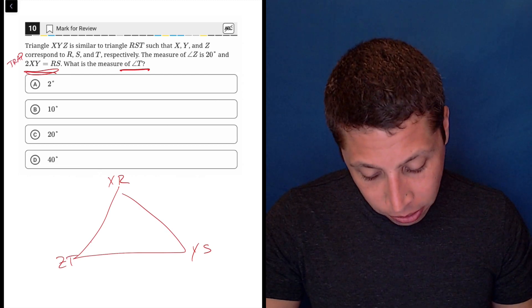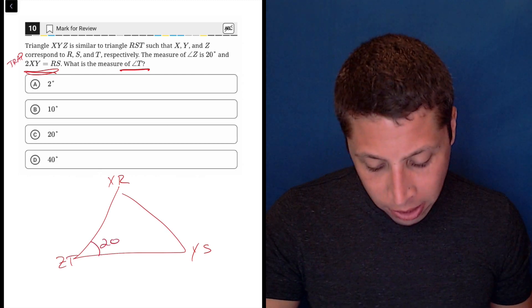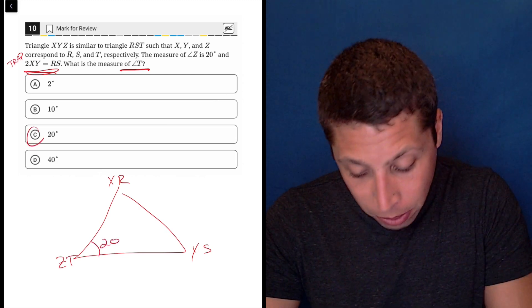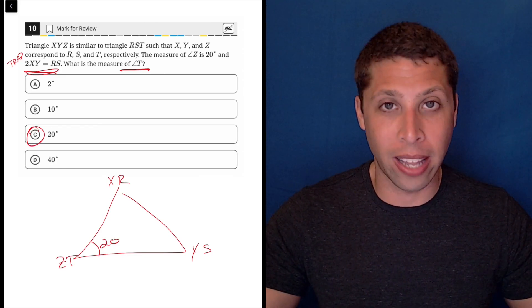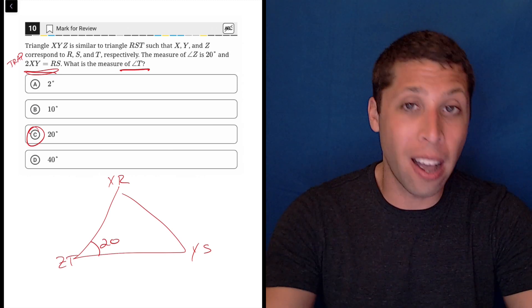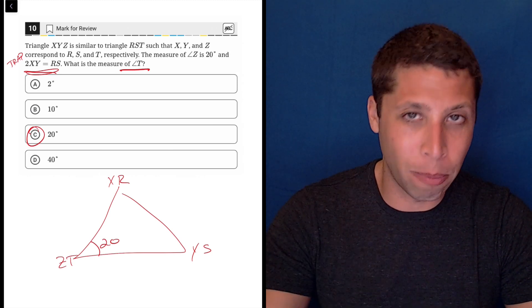So if they tell me that angle Z is 20 degrees, notice that's also angle T. So it just means that angle T is also 20 degrees. It has nothing to do with the side lengths. Yes, one of them is twice as big as the other, but that doesn't affect the angle measures.